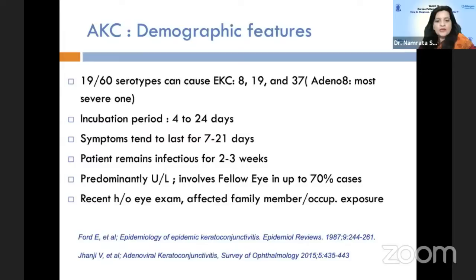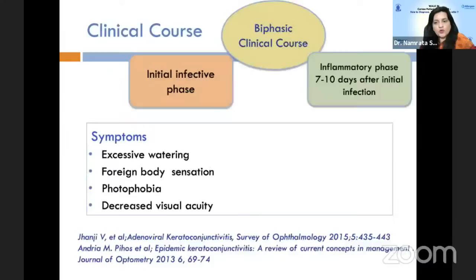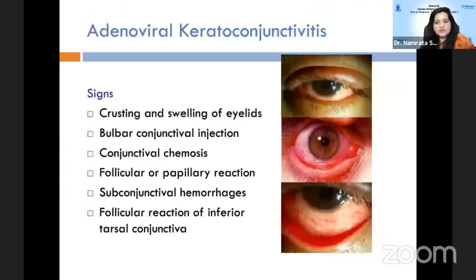It predominantly involves one eye in almost 70% of cases, and there may be a recent history of eye exam, affected family member, or occupational exposure. It has a biphasic clinical course — an initial infective phase and an inflammatory phase 7 to 10 days after the initial infection. Patients may complain of excessive watering, foreign body sensation, photophobia, and decreased visual acuity. Signs include crusting and swelling of eyelids, bulbar conjunctival injection, conjunctival chemosis, and follicular or papillary reaction with sub-conjunctival hemorrhages.